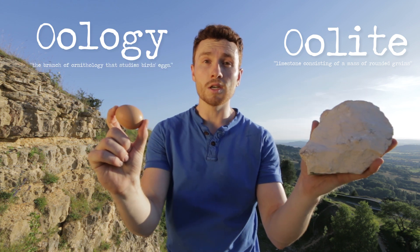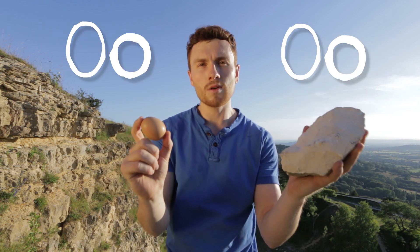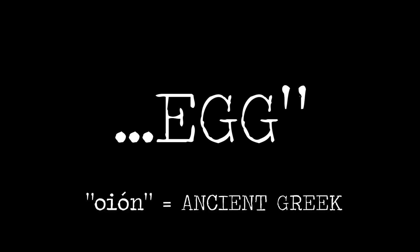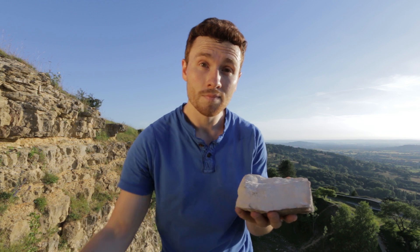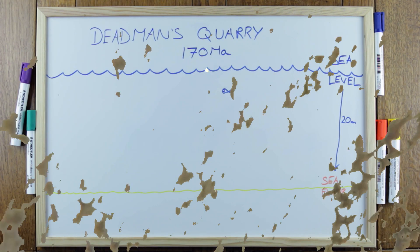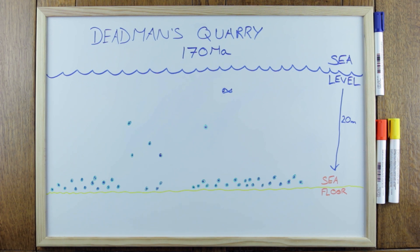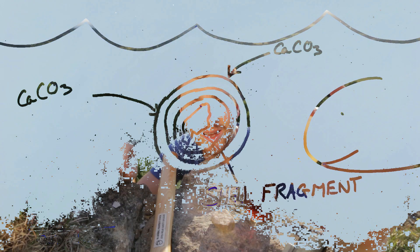Both those words share the same first two letters because they're derived from the ancient Greek word for egg. So oolite also means egg rock, and if you take a closer look at the oolite you'll see that it's made out of lots of tiny spheres all stuck together. These are called ooids and they've got layers — more like tiny onions than eggs.